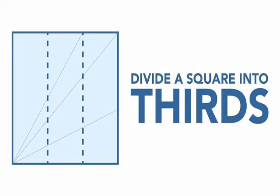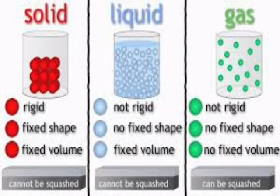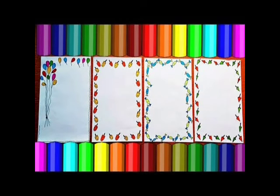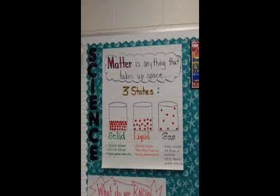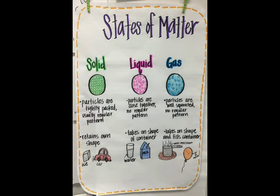Let us prepare an anchor chart. First, cut a chart into three pieces, each of 15 cm × 10 cm. Write the properties of solid, liquid, and gas in separate sheets. Draw pictures related to the points and design the sheets with colourful borders. Paste all the sheets in a large chart paper. Your anchor chart is ready — hang it on the wall. These are some examples of anchor charts.